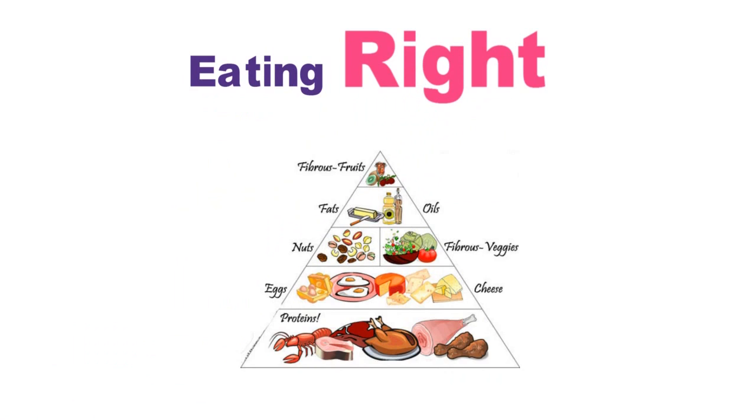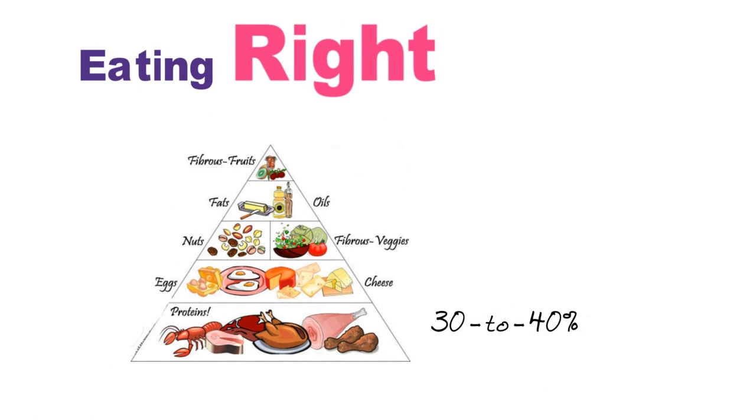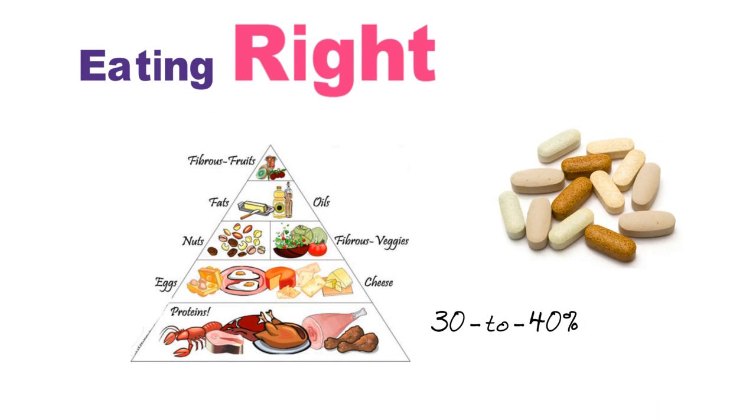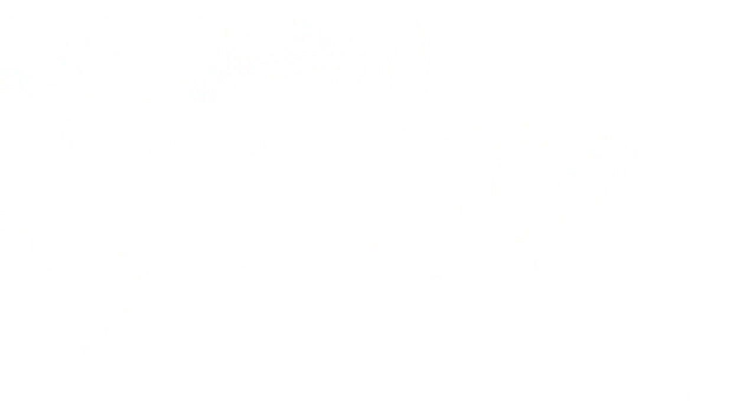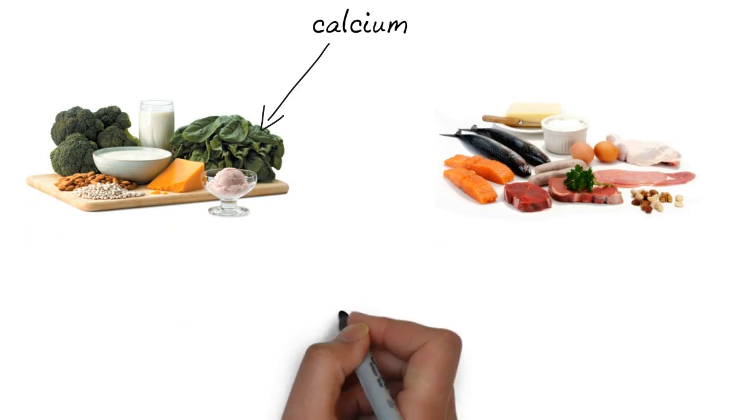Get plenty of protein in your diet to help your body grow, so make 30 to 40 percent of your diet protein. Take a multivitamin to ensure you get enough vitamins and minerals, especially zinc, since not having enough zinc has been shown to stunt growth in children. Get calcium and vitamin D in your diet to promote bone growth.